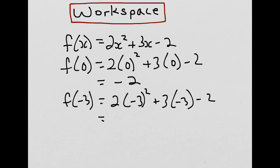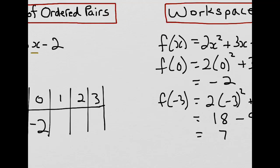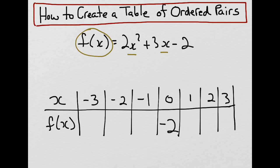Negative 3 squared is 9, times 2 is 18. Negative 3 times 3 is negative 9, and then the minus 2. So, 9 minus 2 leaves us with 7. So, what we would do is come over to our ordered pairs table, and where x was minus 3, f was 7.